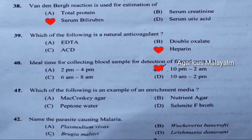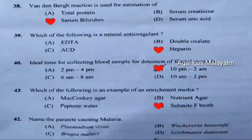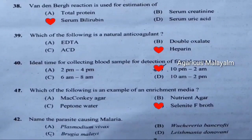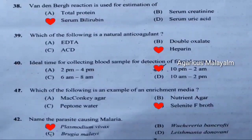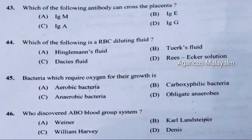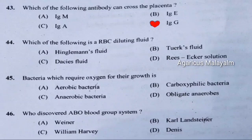Forty-first question: Which of the following is an example of an enrichment media. Correct answer is option D — selenite F broth. Forty-second question: Name the parasite causing malaria. Correct answer is option A — Plasmodium vivax. Forty-third question: Which of the following antibody can cross the placenta. Correct answer is option D — immunoglobulin G.